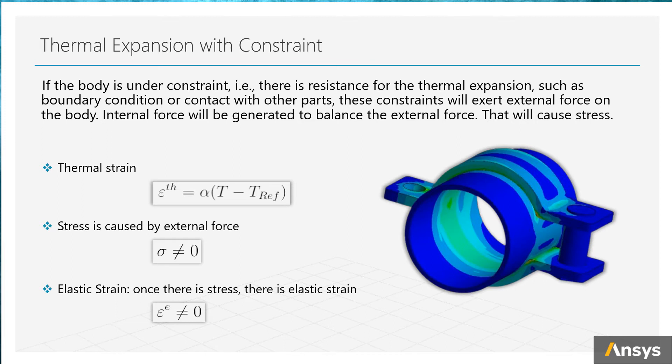So if the pipe is constrained in radial direction like here, it won't be able to freely expand with thermal condition. This way you'll find both elastic strain and thermal strain generated in the body, and you will also have stress distribution.